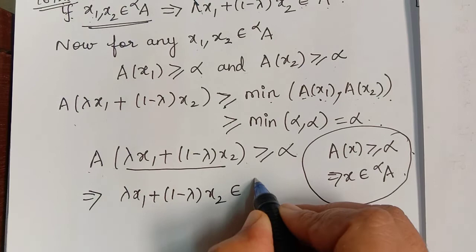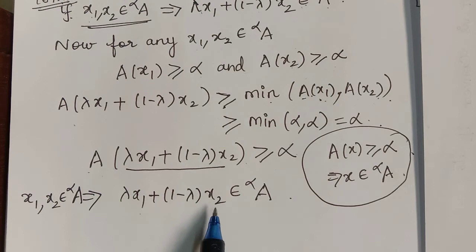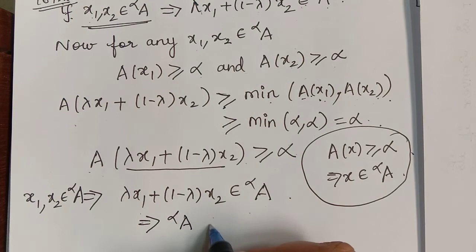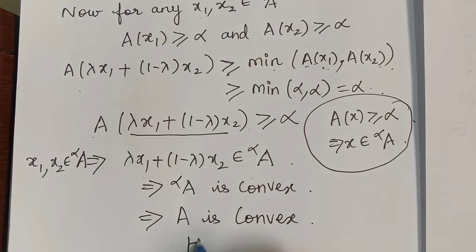We started with x1 comma x2 as elements of the alpha cut set and obtained that lambda x1 plus 1 minus lambda x2 is also an element of the alpha cut set, which implies that the alpha cut set is convex. Hence the fuzzy set A is convex, and we have proved the converse part of this theorem as well. Hope you have understood this theorem. Thank you.